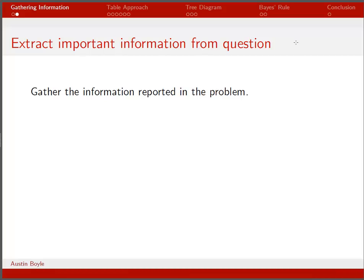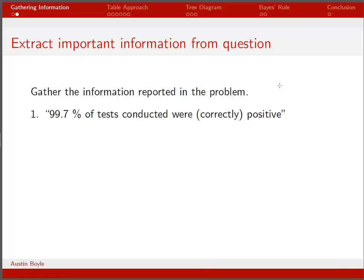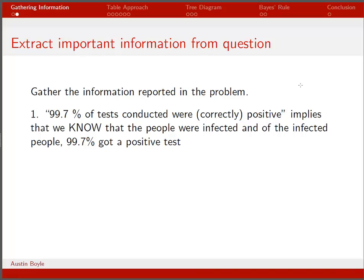After we read the question, we want to extract the information and put it in a useful format. The first thing it tells us is that 99.7% of tests conducted were correctly positive. That means we know the people were infected, and of those infected people, 99.7% got a positive test. Translating this into math, we get the conditional probability: the probability of a positive test given that you're infected is 0.997.